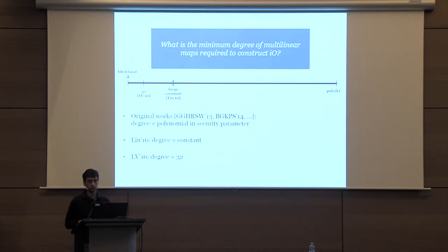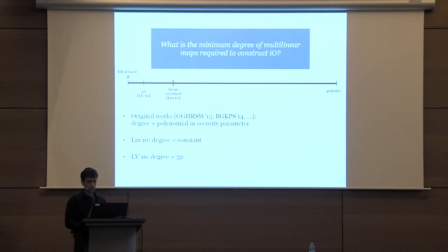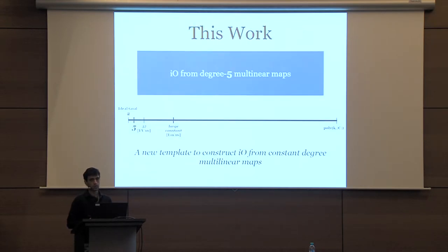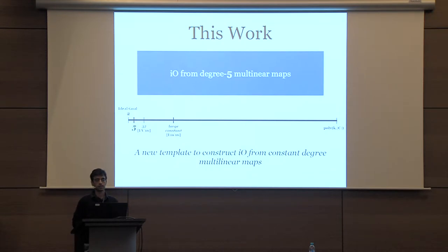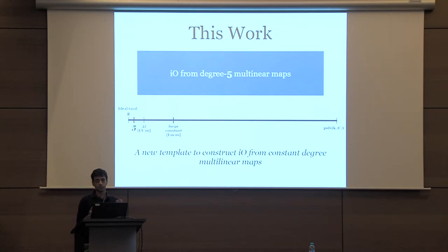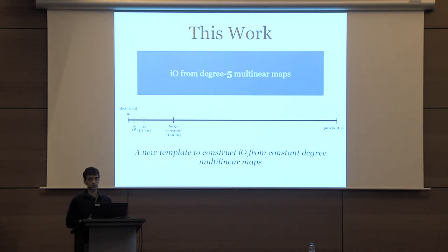Subsequently, a work by Lynn and Maikotanathan showed how to achieve IO from 32-degree multilinear maps. In this work, we reduce this degree further and show how to construct IO from degree-5 multilinear maps. On route, we give a new template to construct IO from constant-degree multilinear maps, and we hope this template might be useful to reduce the degree further.